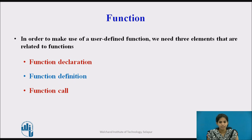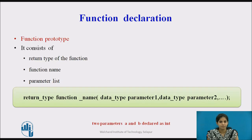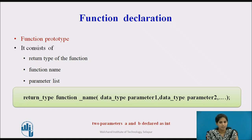The three elements are function declaration, function definition, and function call. First we see the function declaration. Like any variable, a function must also be declared before it is used. Function declaration informs the compiler about the function name, parameters that are accepted, and its return type. It is also called a function prototype. Basically, function declaration consists of return type, function name, parameter list, and a terminating semicolon.